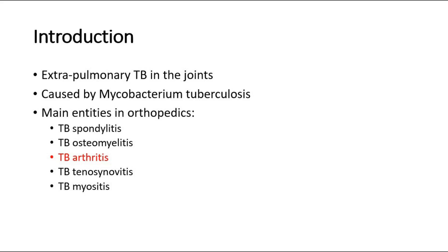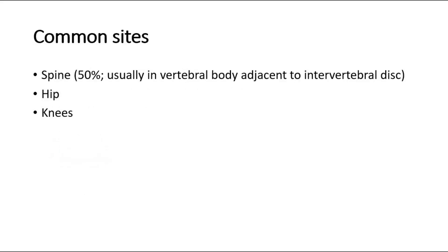The common sites of TB arthritis include the spine, which consists of 50% of cases, and it usually settles in the vertebral body adjacent to the intervertebral disc. Other sites include the hip and the knee joint.